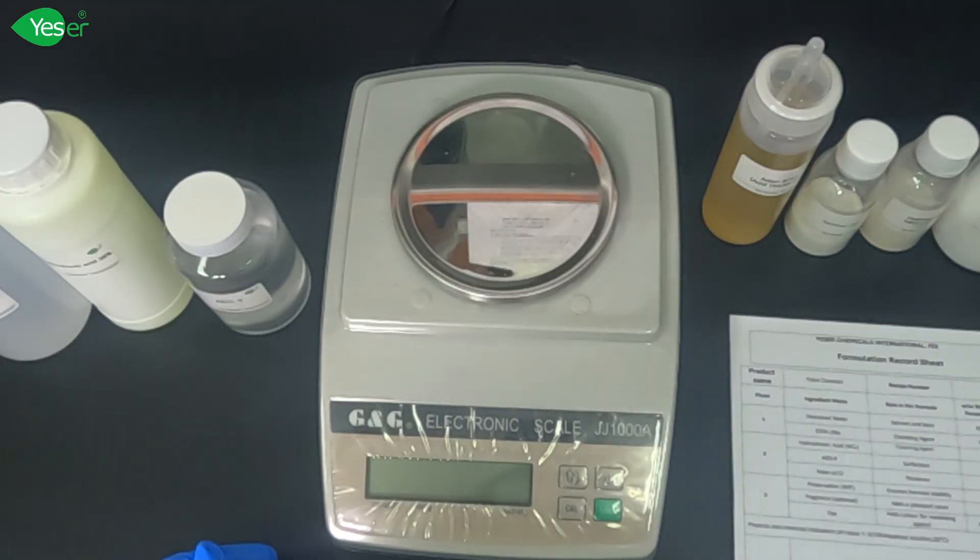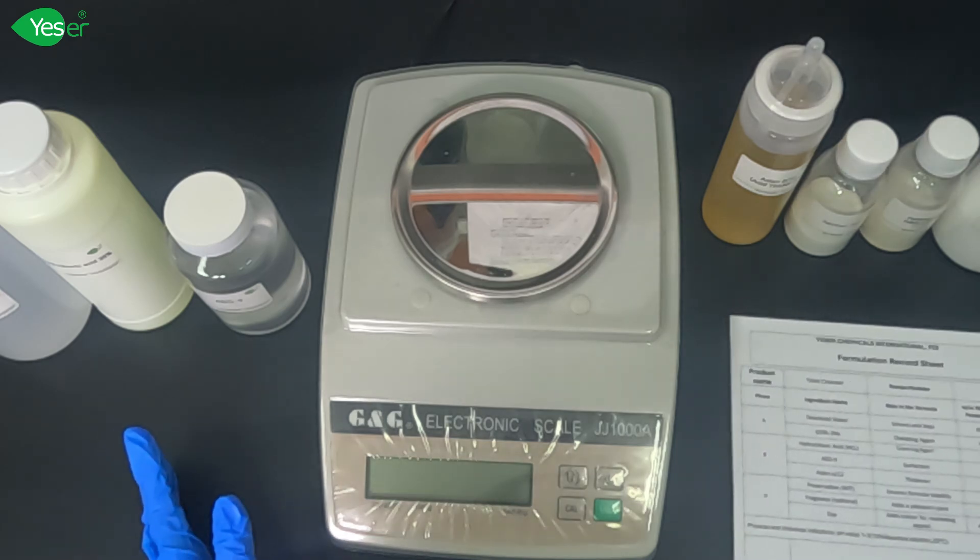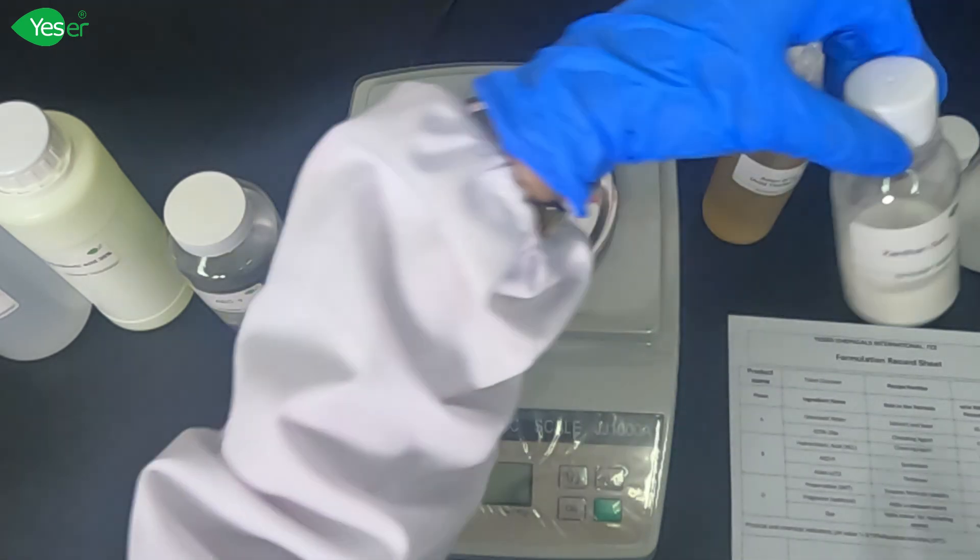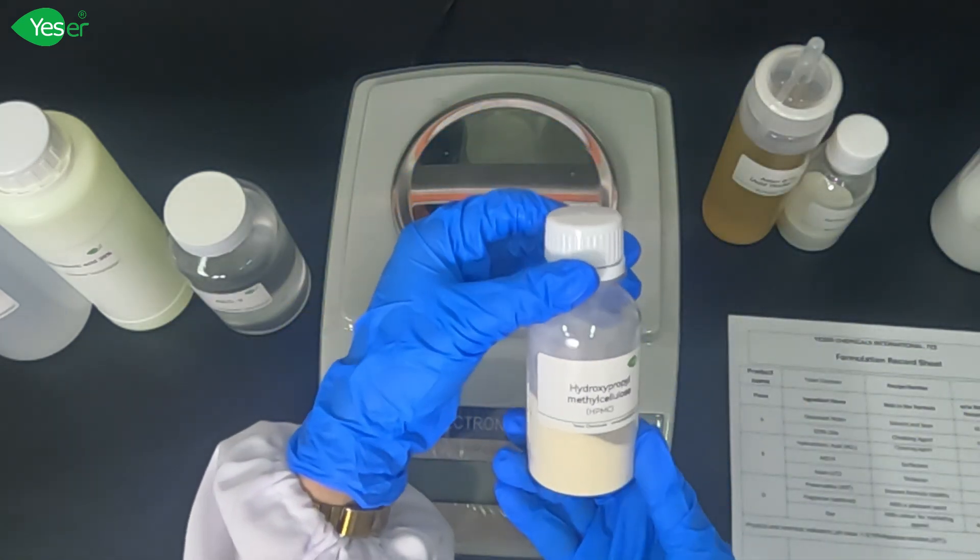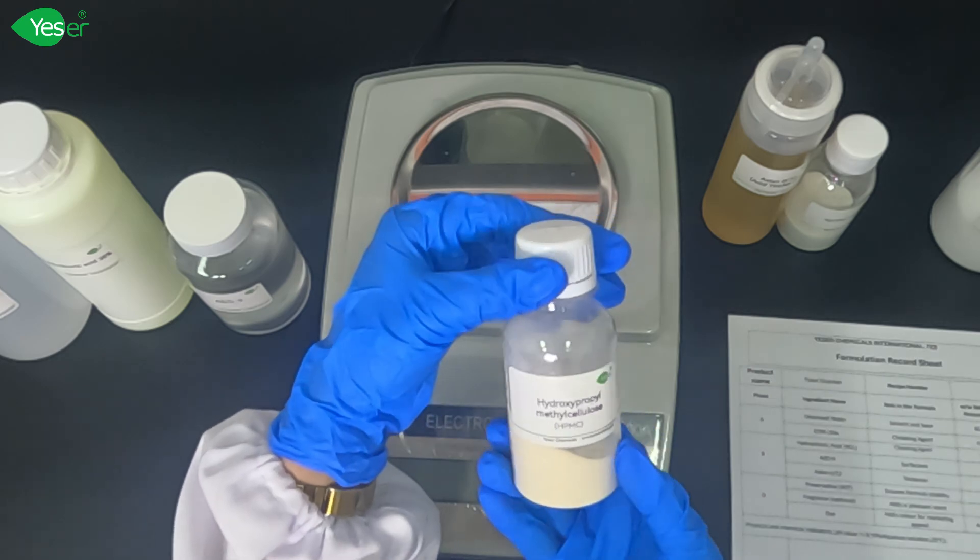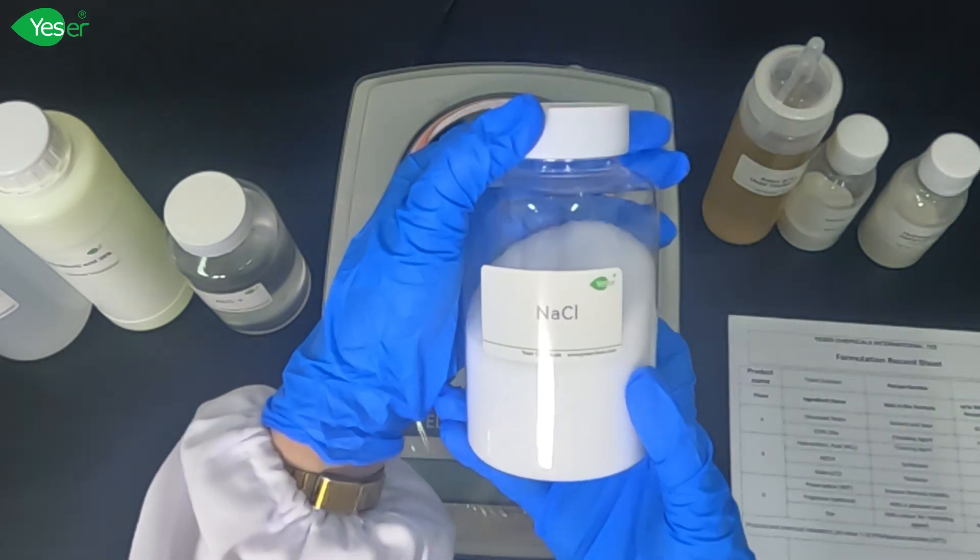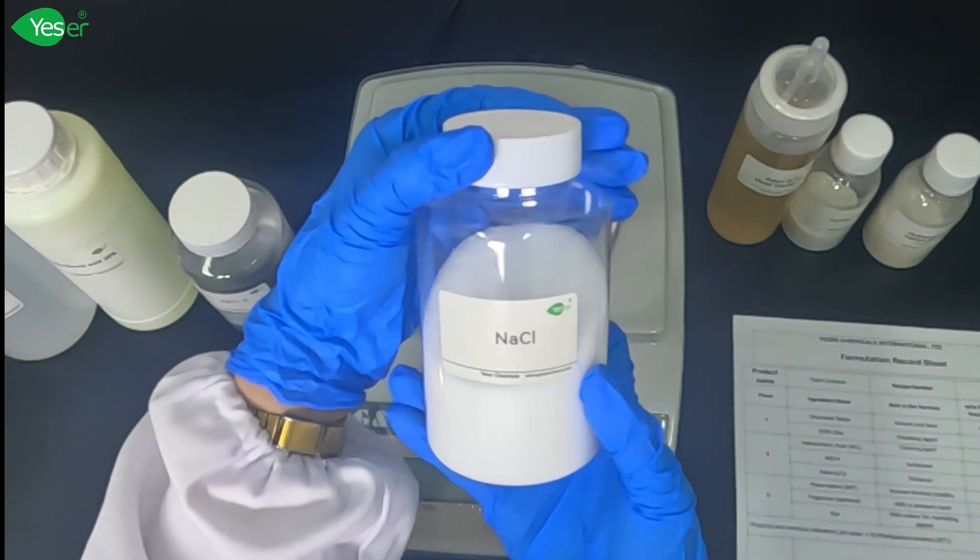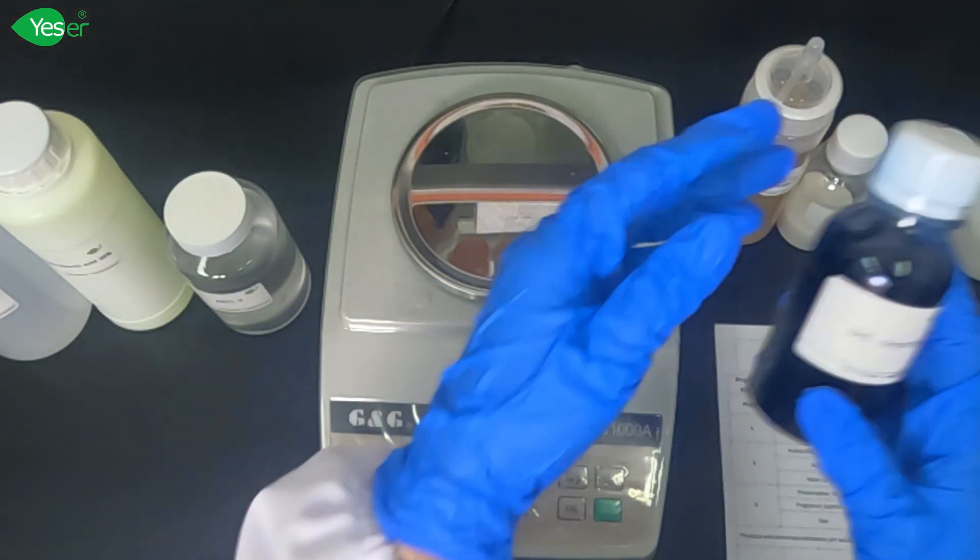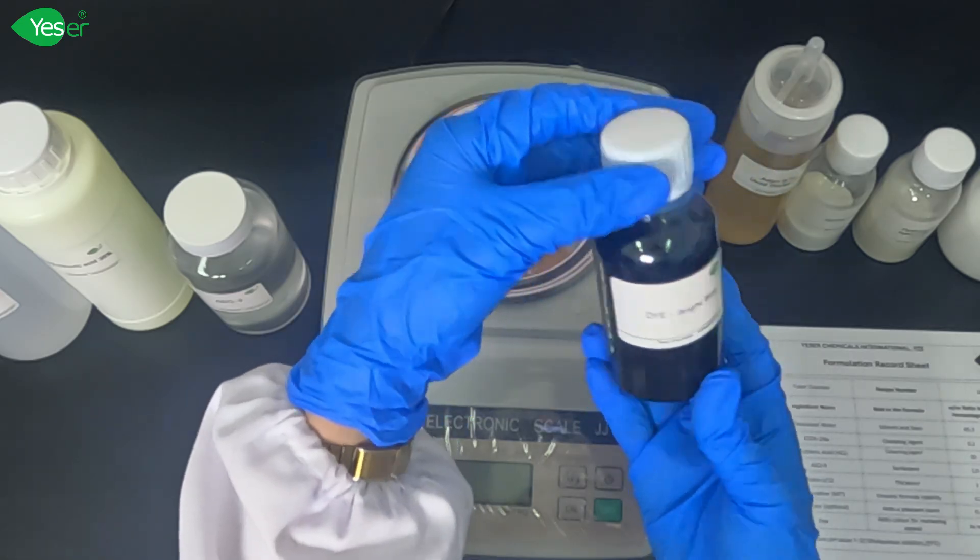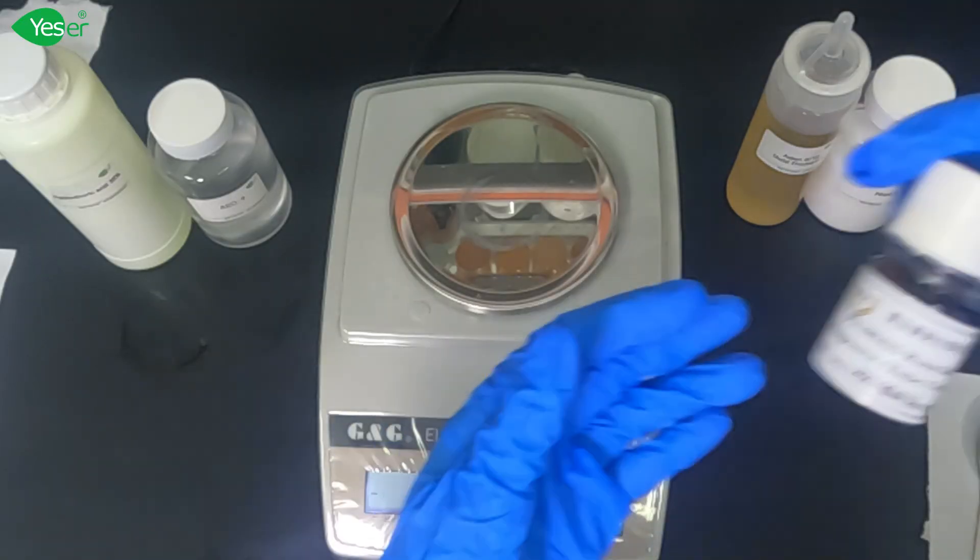For the other thickeners, we will be using common thickeners that are used for home care and personal products: xanthan gum, hydroxypropyl methyl cellulose or HPMC, and sodium chloride or salt. Next ingredient we have is dye to add color to our product, and fragrance.